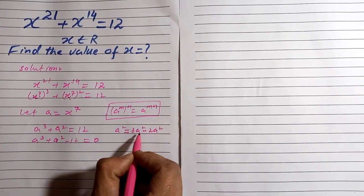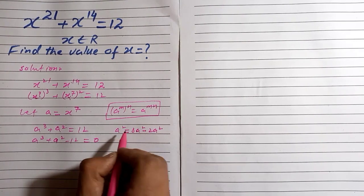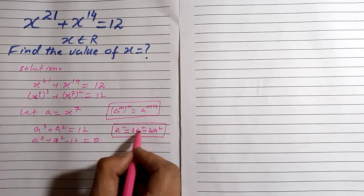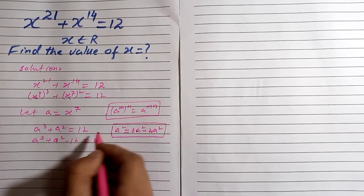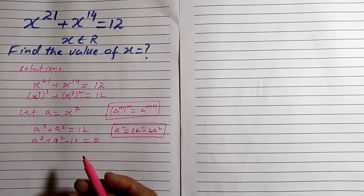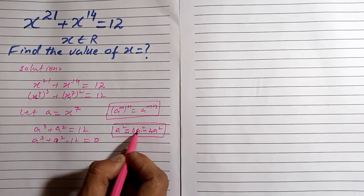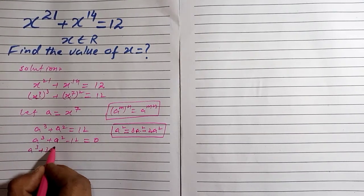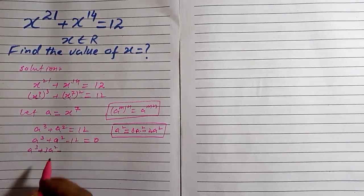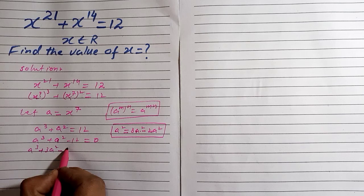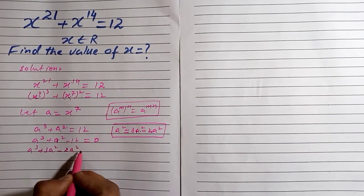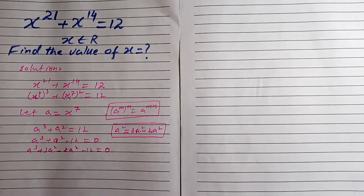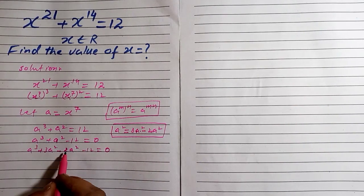We rewrite: 3a^2 minus 2a^2 equals a^2. We take common factors to find the value of a more easily. So we have a^3 plus 3a^2 minus 2a^2 minus 12 which is equal to 0.